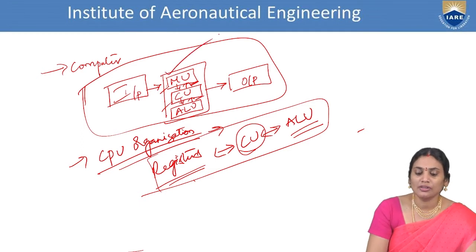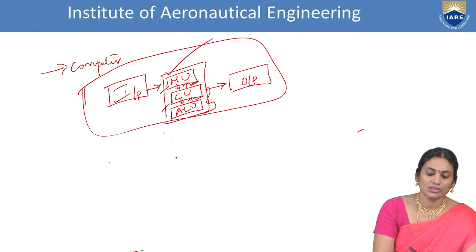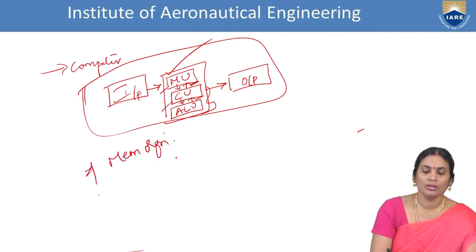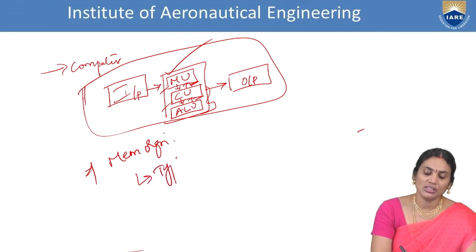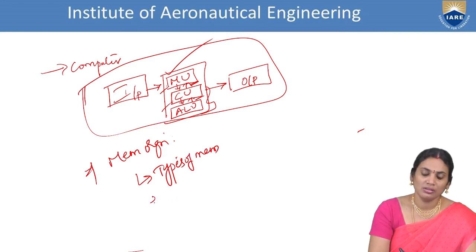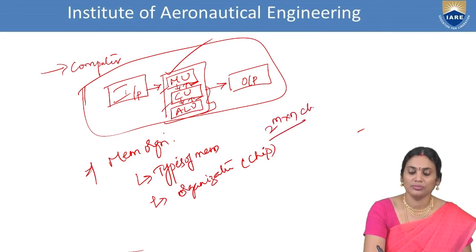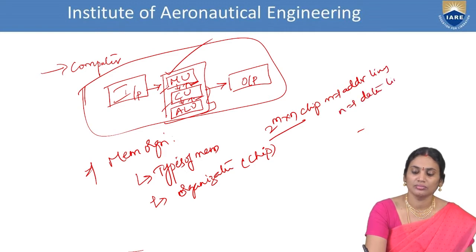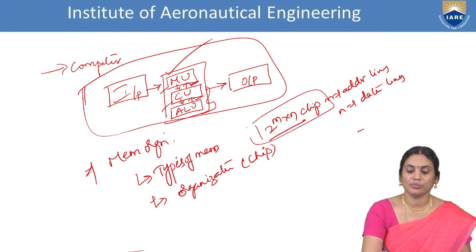CPU organization with its control unit and memory unit has been discussed. The next topic is Memory Organization. In memory organization, we consider how data is stored, how it is manipulated, and what the organization of a memory chip is. We discuss types of memory and chip organization. Generally, memory is represented in the notation of 2^m × n chip, where m represents address lines and n represents data lines.